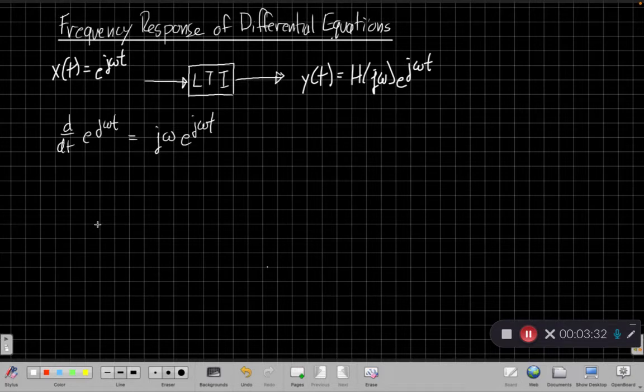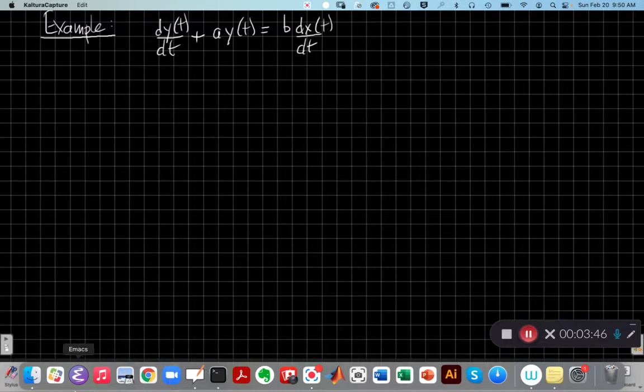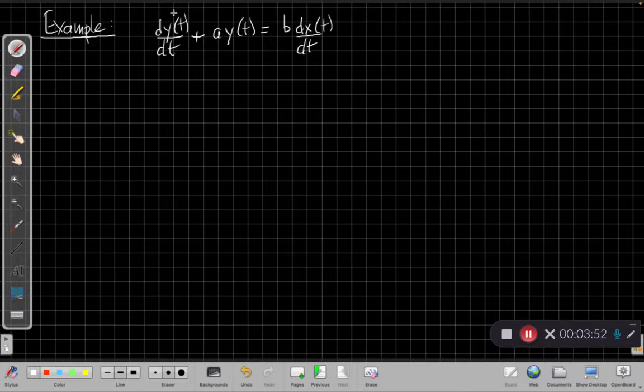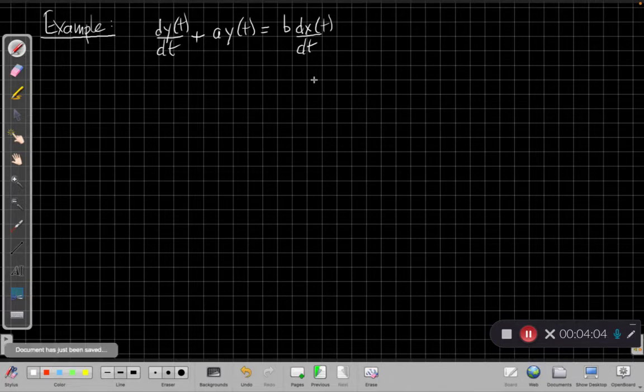Let's see how we can use these ideas together to look at a very simple differential equation, a system described by a simple first order differential equation, and then figure out the frequency response of that system. So for our example, we're going to assume this first order differential equation: dy/dt + ay(t) = b dx/dt.